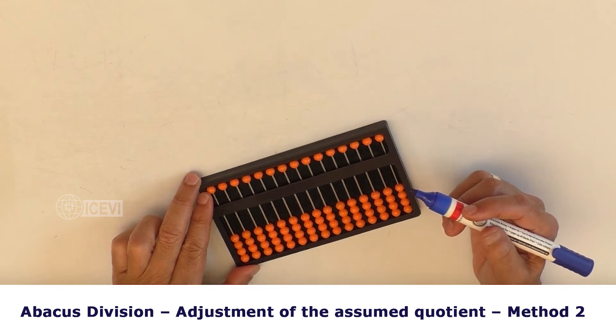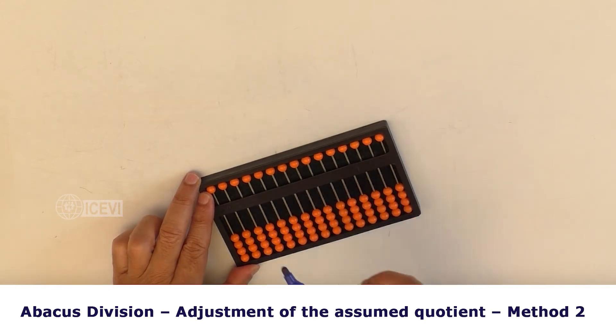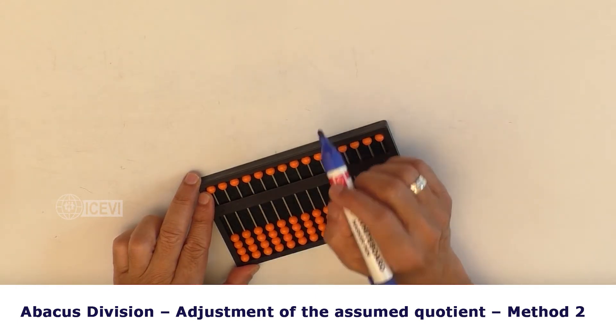Title of the video: Abacus Division - Adjustment of the Assumed Quotient in Method 2.